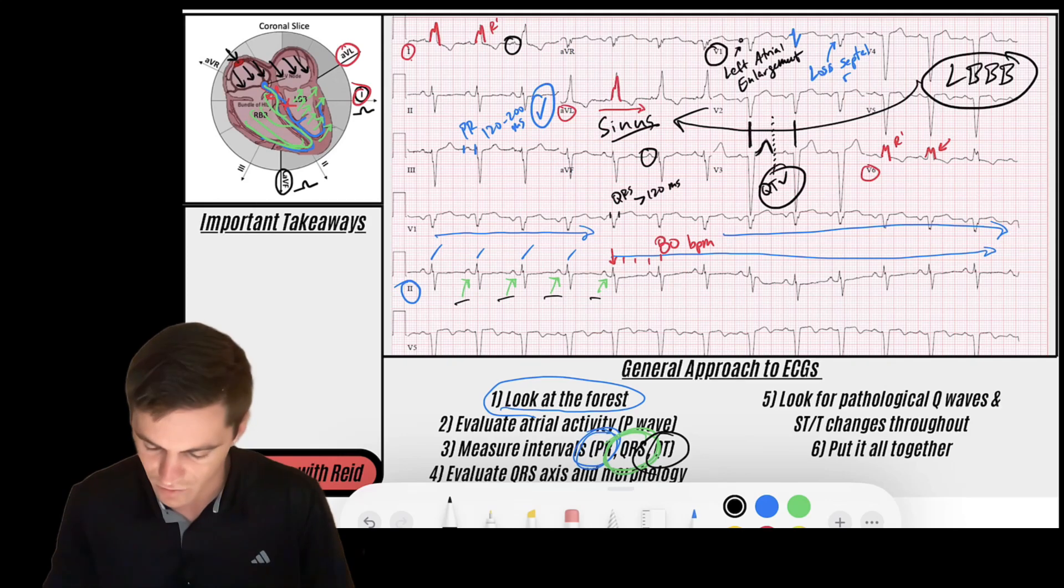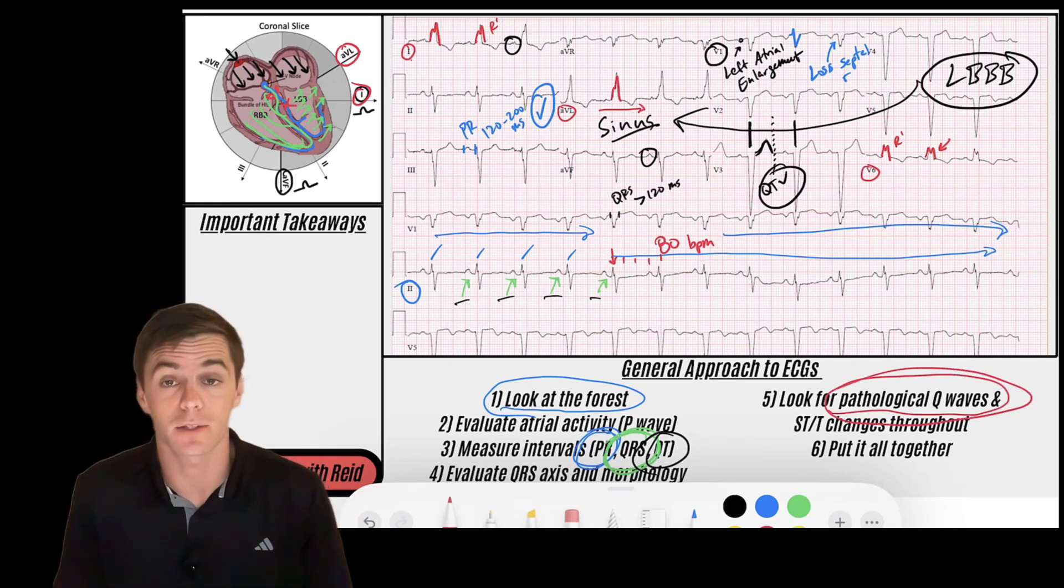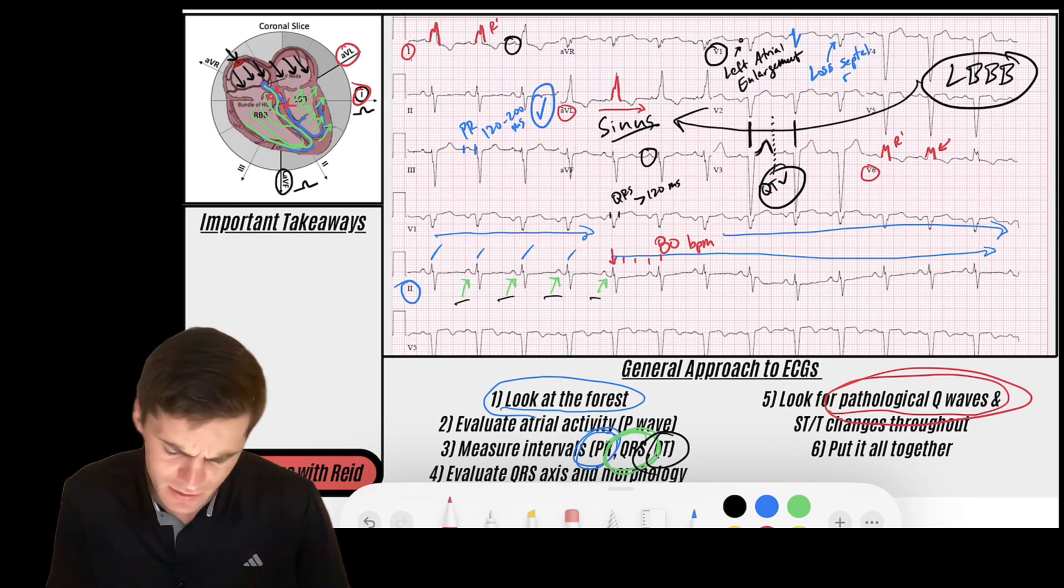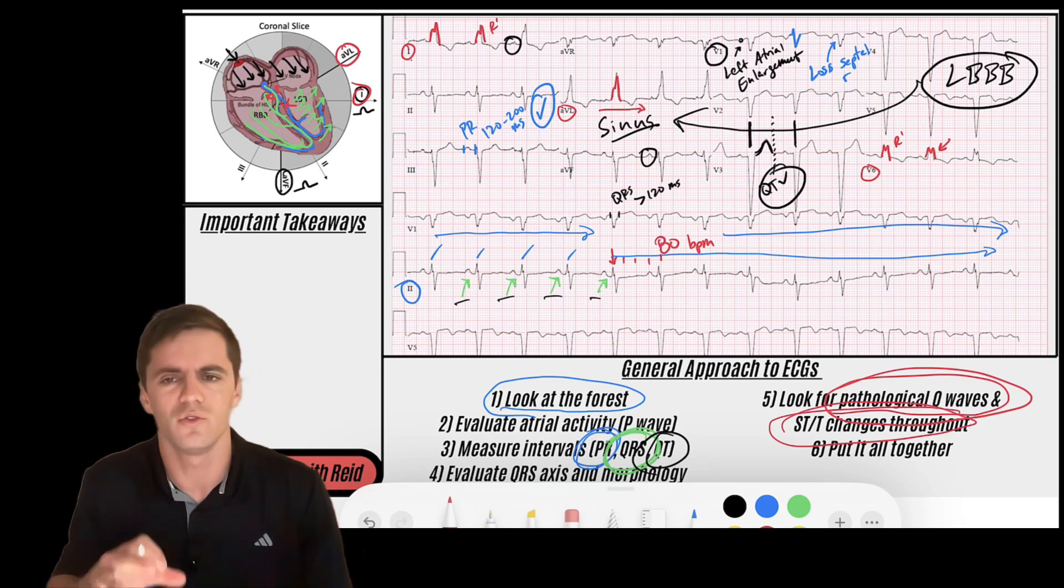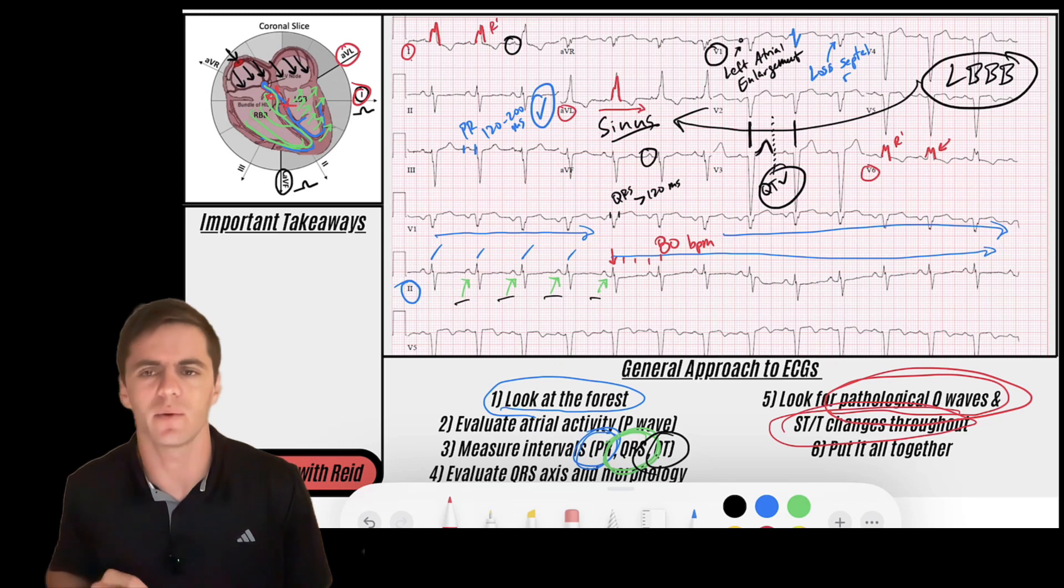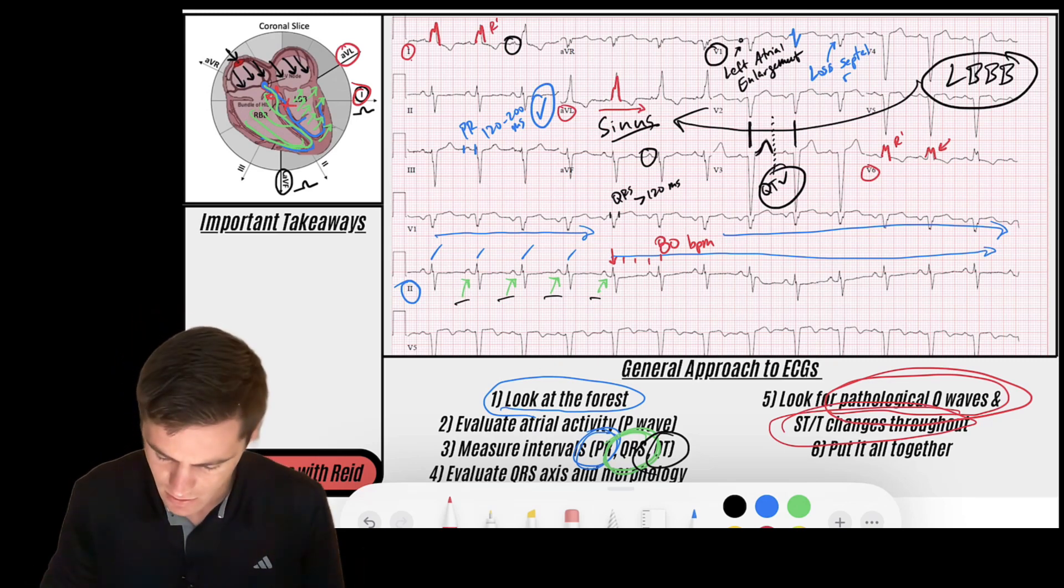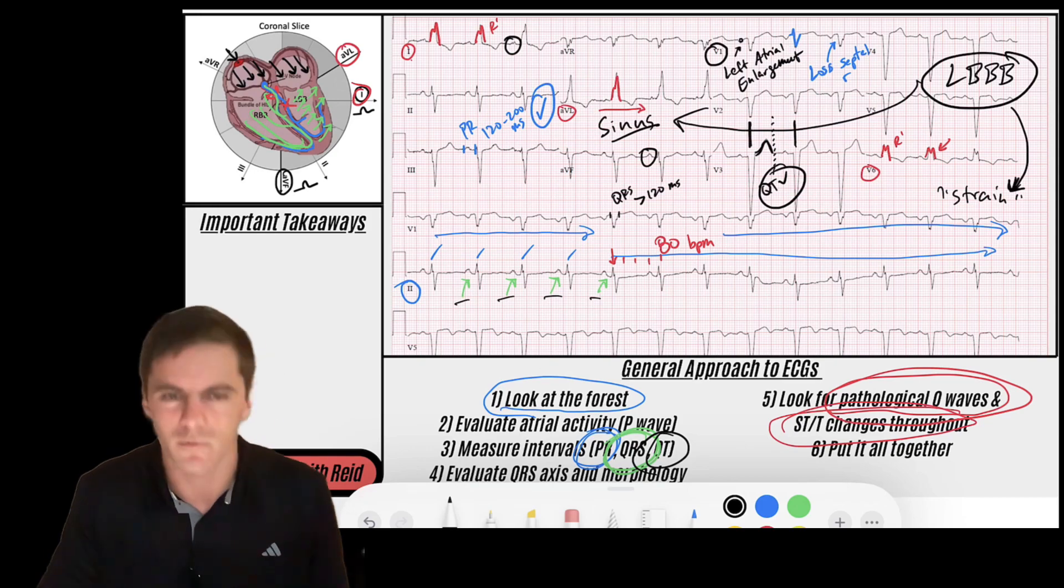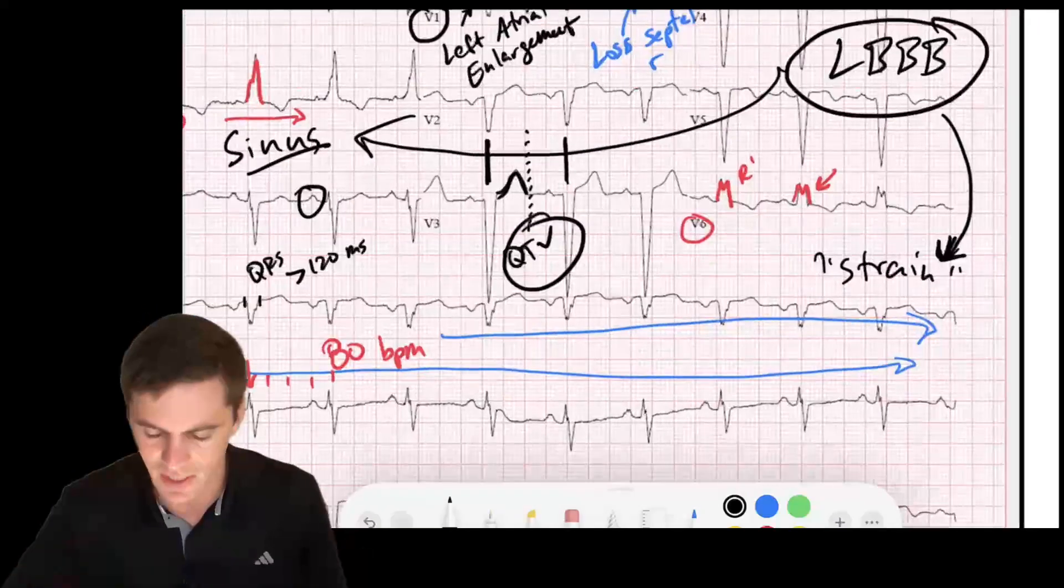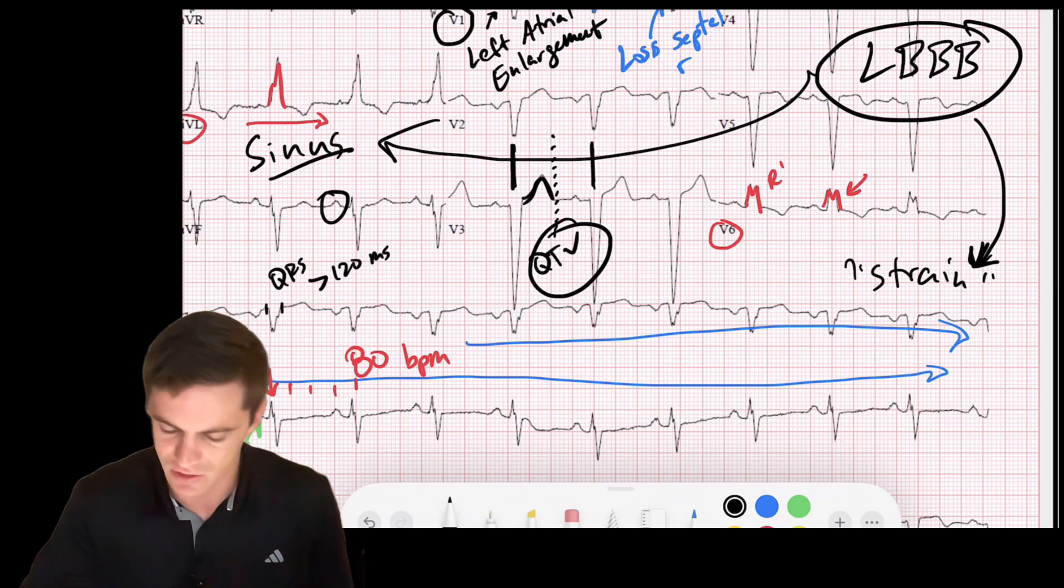We evaluated our QRS morphology. Let's take a look for pathological Q waves. Obviously, we're going to have deep Q waves in the septum. That's because we lose our septal R wave. Otherwise, I don't see any pathological Q waves here or ST or T wave changes that are disproportionate to the amount of normal strain that we see. So usually we get this strain pattern in left bundle branch. So if I drew an arrow over here, that's strain.